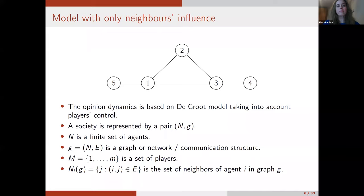Now about the model we use in our papers. We consider some network, and the opinion dynamics is based on the DeGroot model taking into account players' controls. A society is represented by a finite set of agents and a graph G — sometimes called the network or communication structure. We also have a finite set of players. We denote the set of neighbors of agent I in graph G as my neighborhood. Player L can influence any agent I from group A_L, which is the group of nodes under influence of player L, with some control at time T.